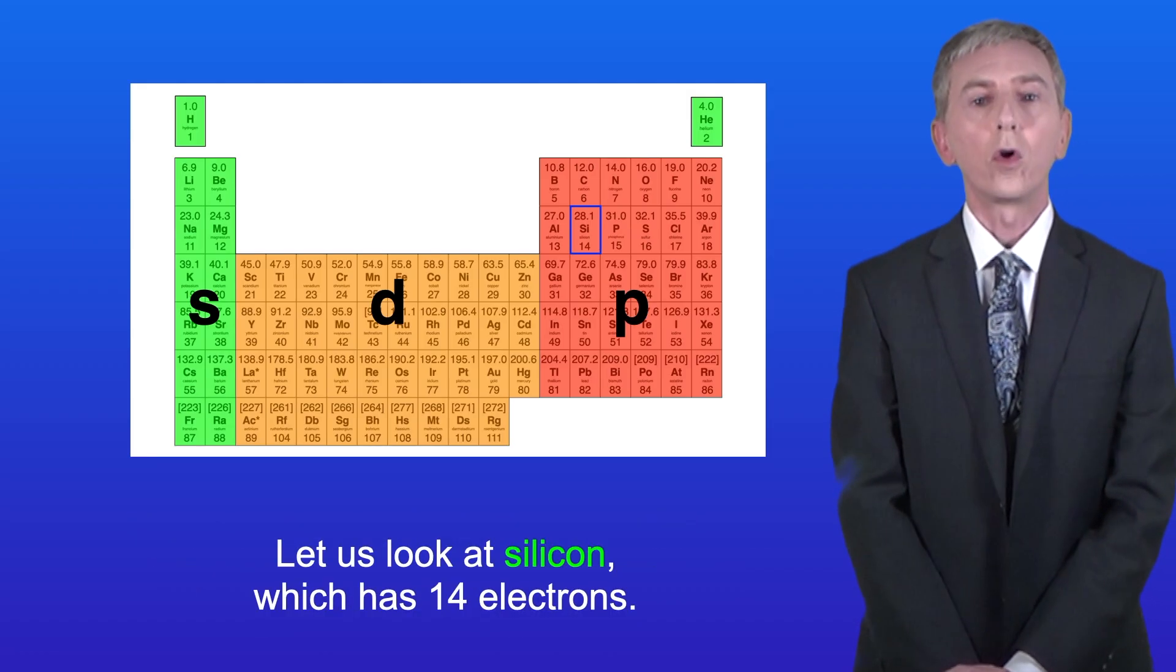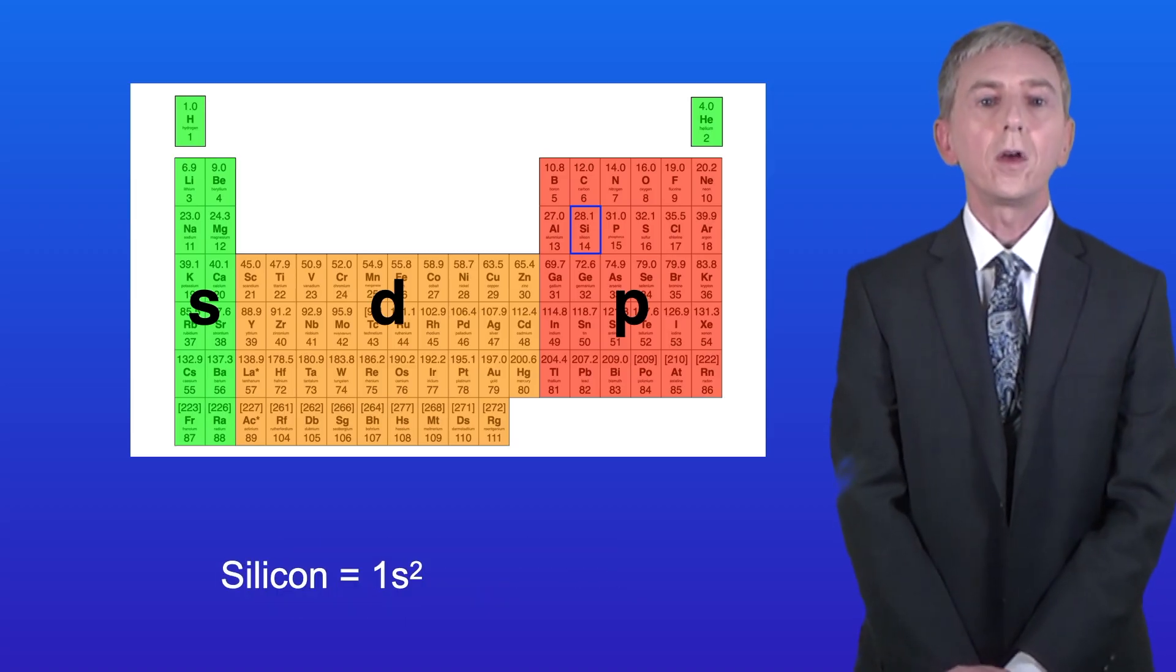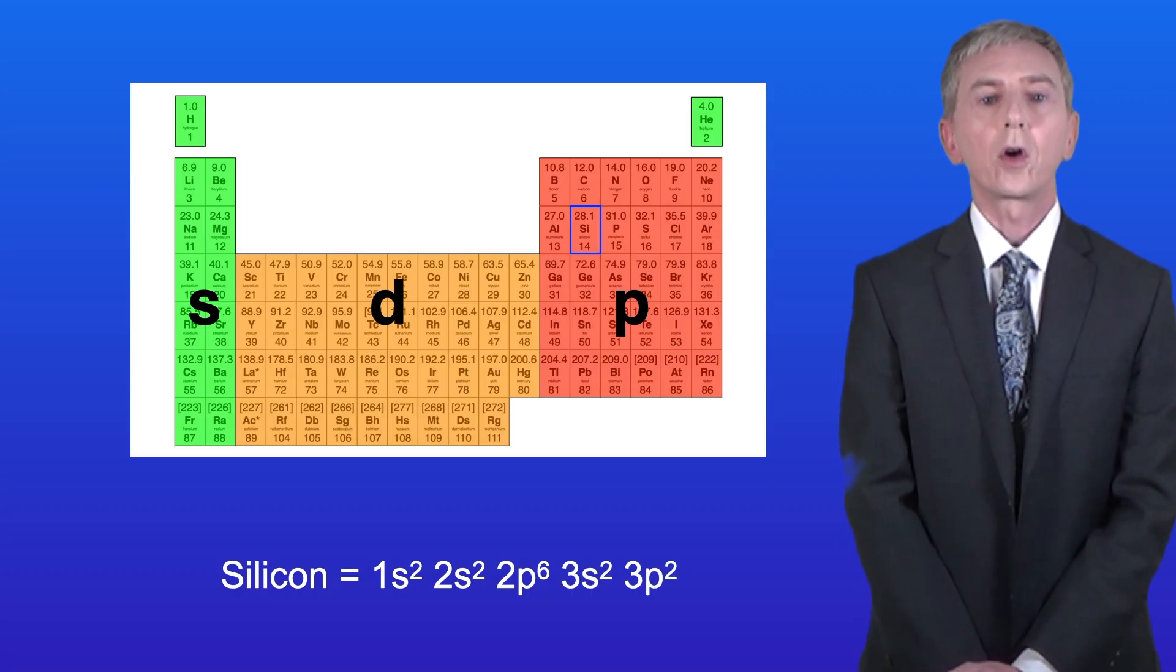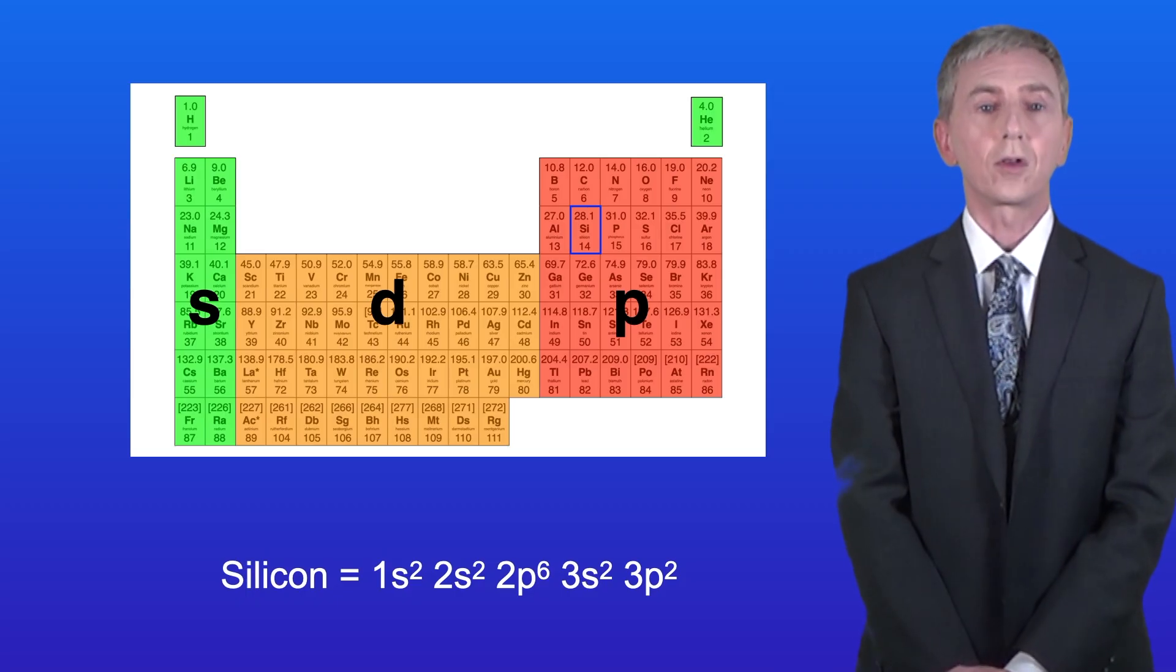Let's look at silicon, which has 14 electrons. The first two electrons go into the 1s subshell, the second two go into the 2s subshell, and the next six go into the 2p subshell. The next two electrons go into the 3s subshell, and finally we've got two electrons in the 3p subshell.